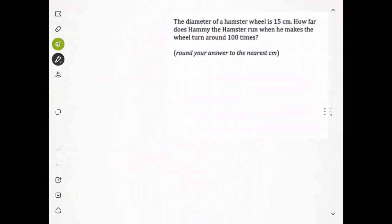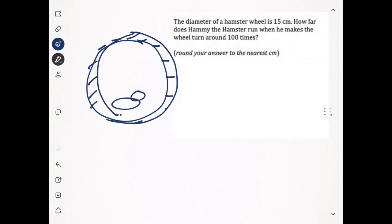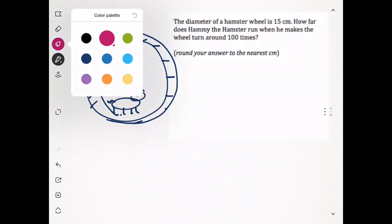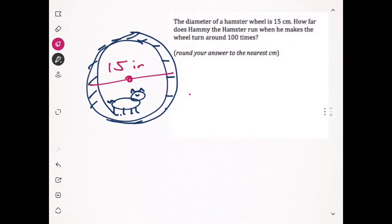Example three: the diameter of a hamster wheel is 15 inches. How far does Hammy the hamster run when he makes the wheel turn around 100 times? So our hamster is going to be running and this wheel is going to turn around 100 times. First we're going to find one circumference. What do we know? We know that the diameter equals 15.